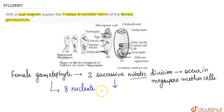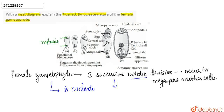During the process of formation of the 7-celled, 8-nucleate female gametophyte, what happens is that the two nuclei undergo mitotic division — mitosis occurs in them — and then these two nuclei move to the opposite ends: one moves to the micropylar end and one moves to the chalazal end.